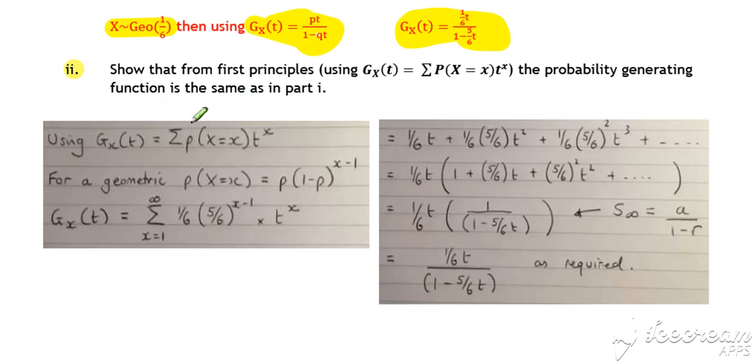So the first principles approach for this one, again we start by using our general definition of a probability generating function, probabilities times t to the x. For a geometric, our probabilities are given by p times 1 minus p to the x minus 1.